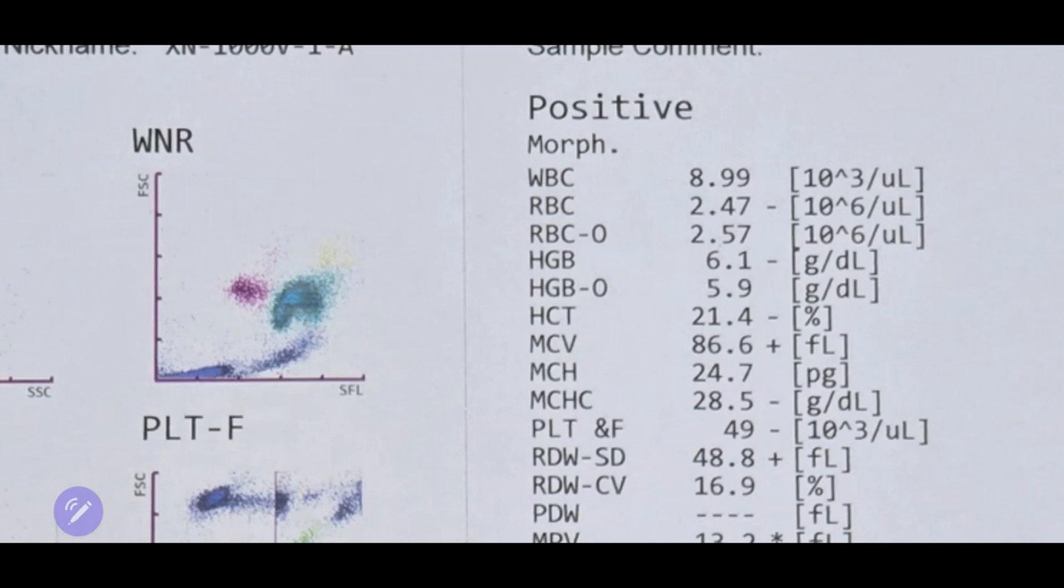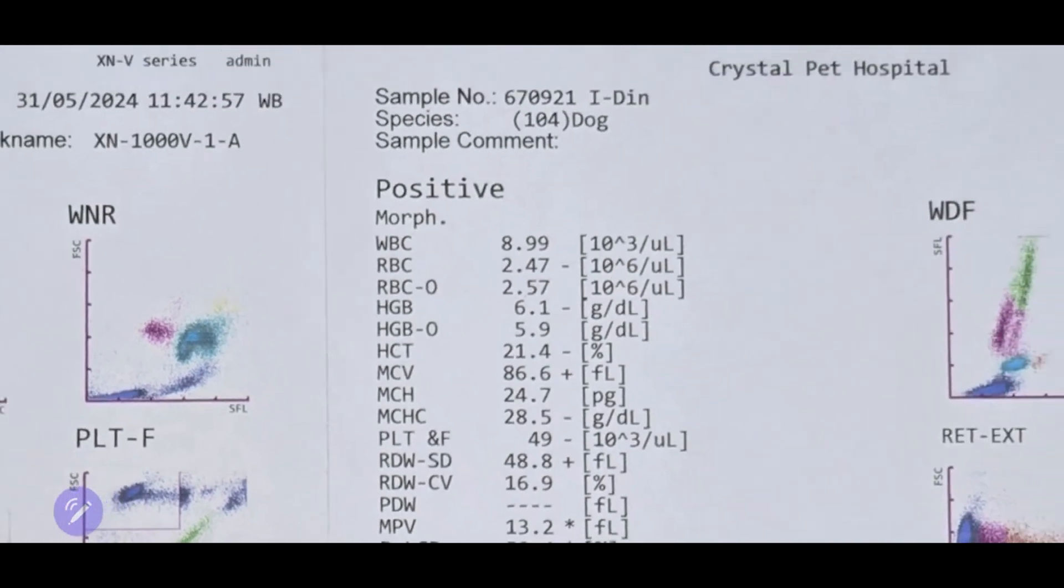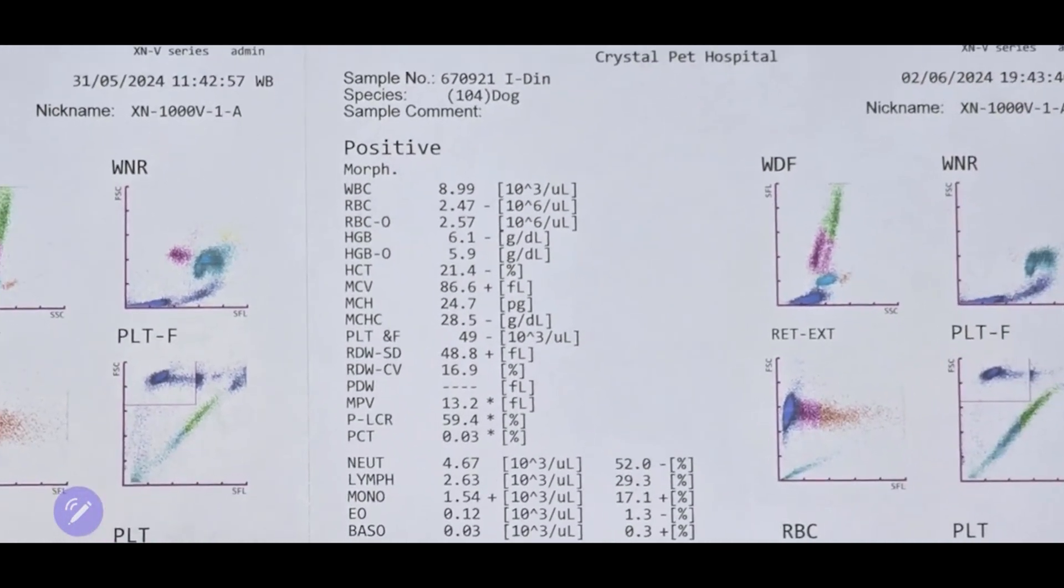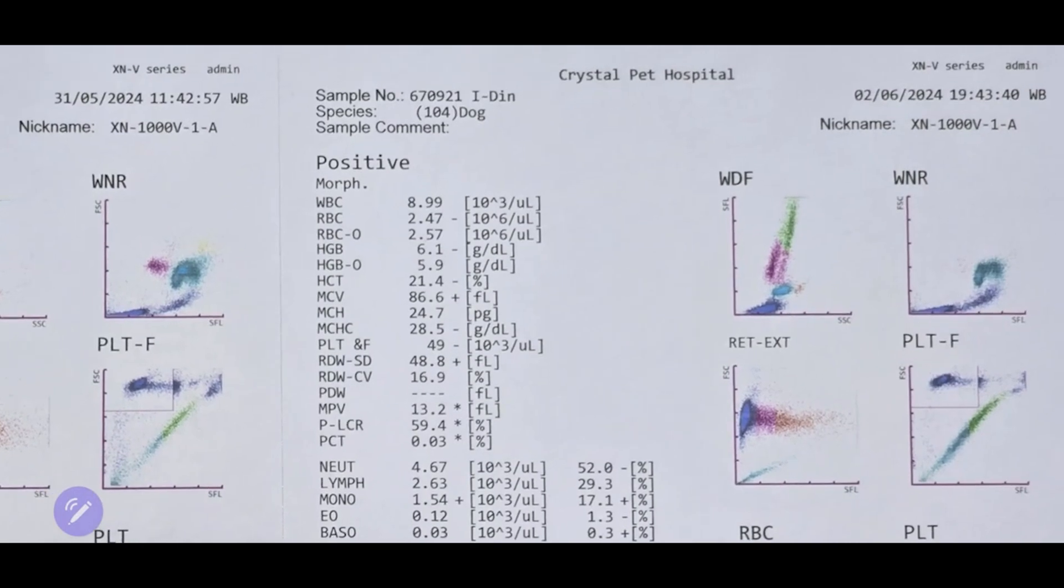Let's take a look at the blood test results. Starting with the graph, we can clearly see the changes that have occurred. After the treatment, the NRBC has disappeared, and the U-shaped graph has shifted more towards an L-shape, though there is still a slight U-shape present.